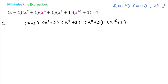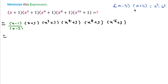Here we can see (x+1) is there. So I will multiply by (x-1) and divide by (x-1) in this expression. Then we can write, using the formula (a-b)(a+b) = a²-b².